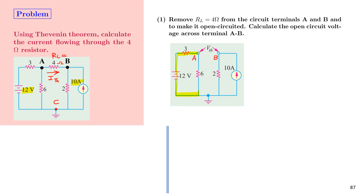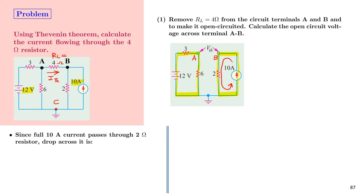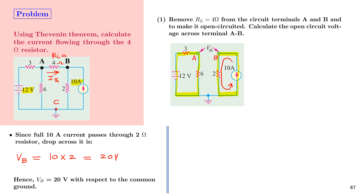After removing the load resistor, there are two loops to solve. Considering the second loop first, which has the 10A current source and the 2 ohm resistor: the full 10A flows through the 2 ohm resistor since there is a ground connection. The voltage drop VB across the 2 ohm resistor is 10 × 2 = 20 volts, measured with respect to the common ground.